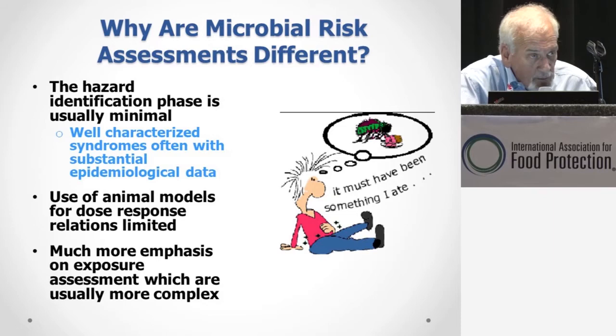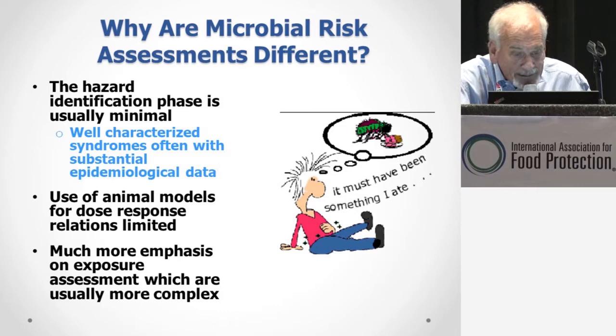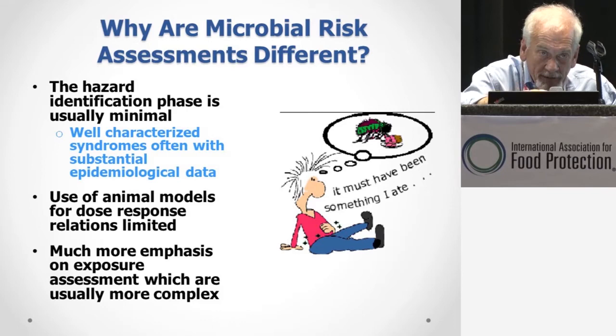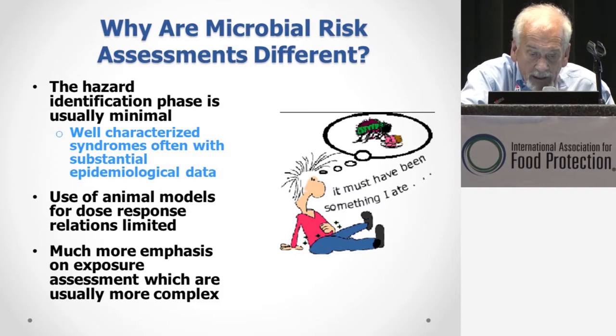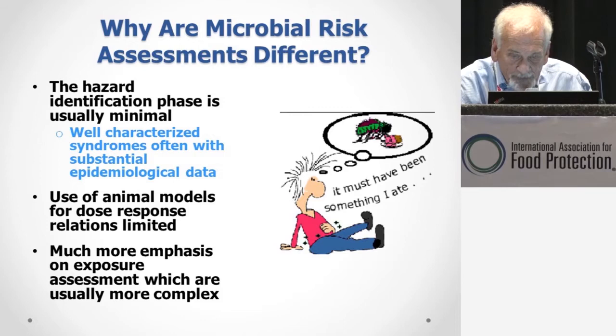While we use animal models on occasion, the use of animal models in many cases just confuses the issue, because you always have to convert the animal data into something that is appropriate for humans. I might also note that in a microbial risk assessment there is typically much more emphasis on exposure assessment, and very often the exposure assessment is going to be highly complex.